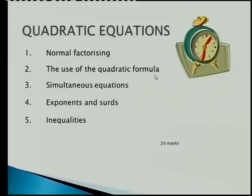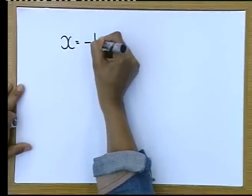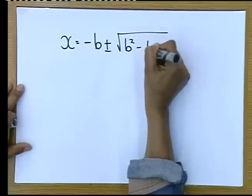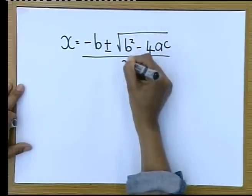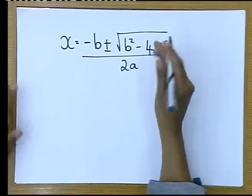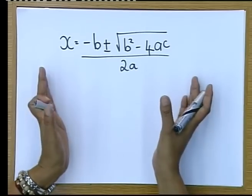Now when I say the use of the quadratic formula, you immediately know, you go to your formula sheet, and you do the formula. X is equal to negative B plus minus the square root of B squared minus 4AC over 2A. That is the quadratic formula. Normal factorizing is basically just factorizing a trinomial or taking out a common factor.